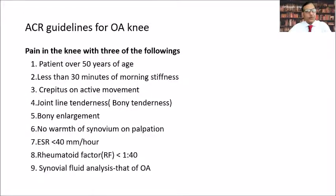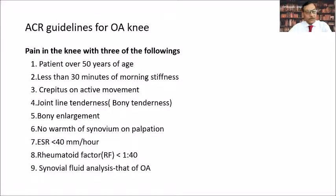The ACR guidelines for osteoarthritis of the knee include nine criteria along with knee pain as the fundamental requirement. Along with pain in the knee, any three of the following nine are required: patient over age 50 years, less than 30 minutes of morning stiffness, crepitus on movement, joint line tenderness, bony enlargement, and no warmth of synovium on palpation.